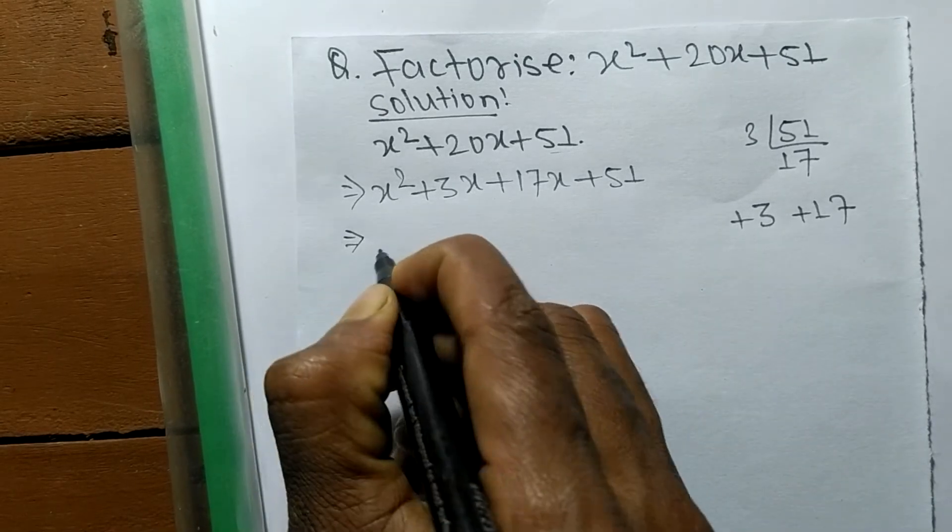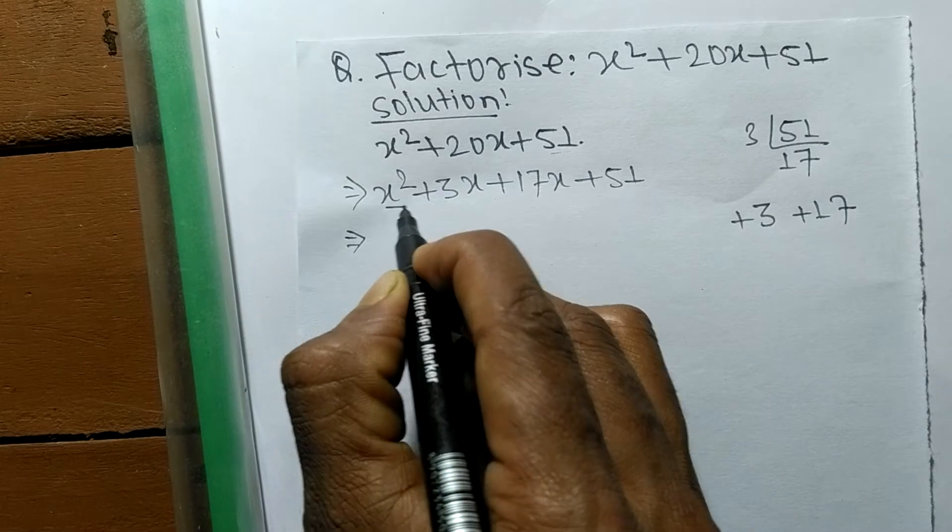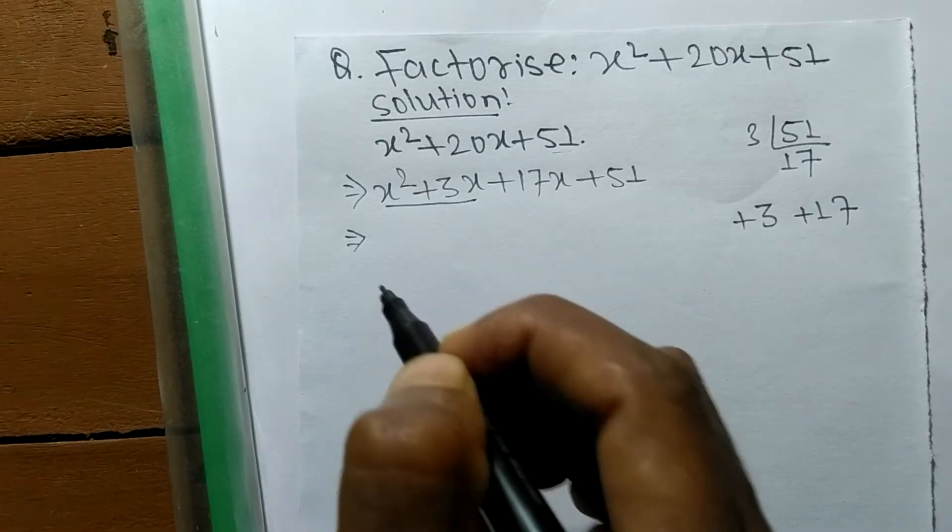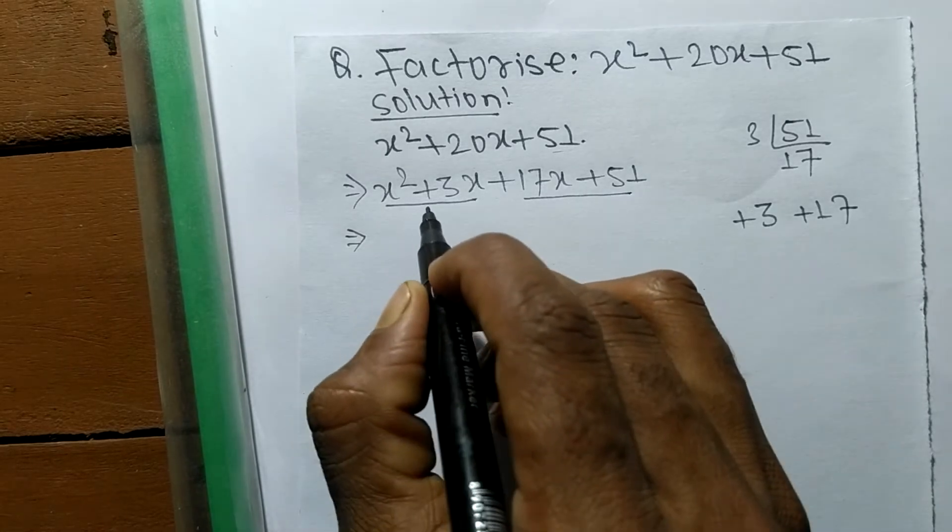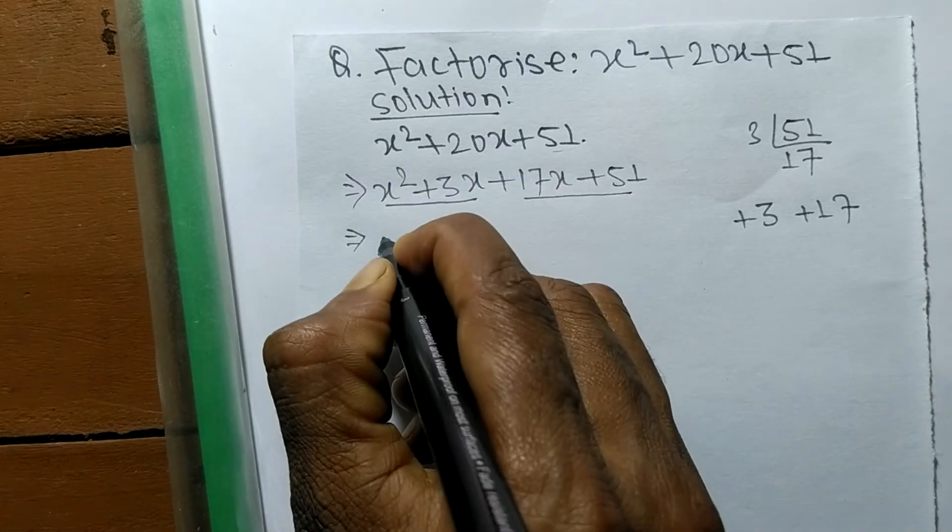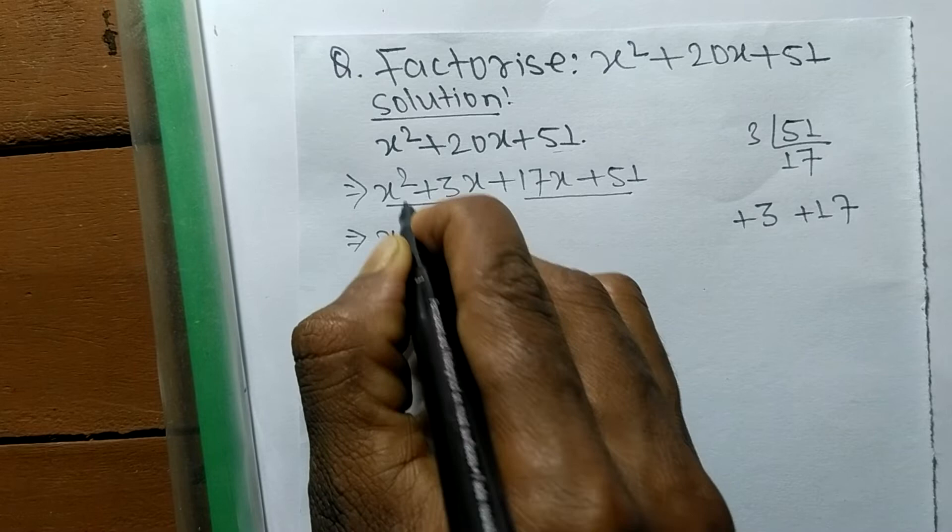From the first pair we have to find common factors. In the first pair, the common is x, so the remaining is x + 3.